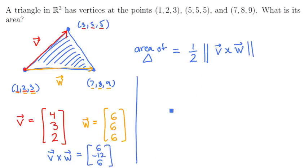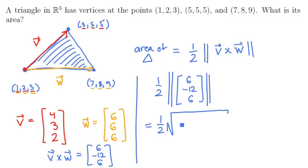To complete the problem, we simply need to get half of its magnitude of this vector (6, -12, 6). So let's go and compute that now. So that's 1/2 the square root of 6² plus (-12)² plus 6². So that's 1/2 the square root of 36 plus 144 plus 36. And that's going to simplify to 1/2 the square root of 216.